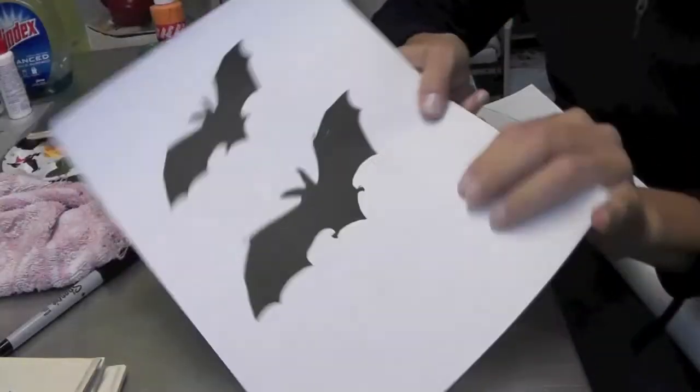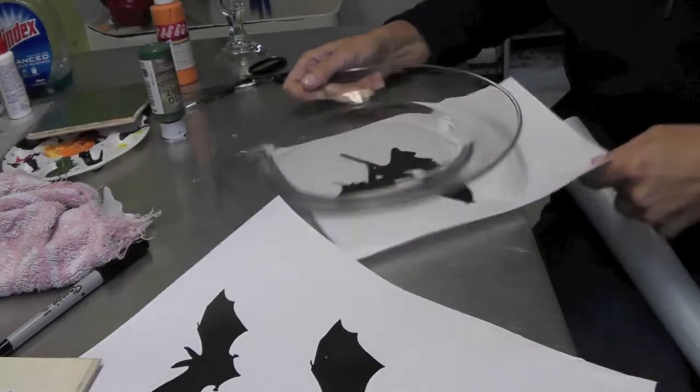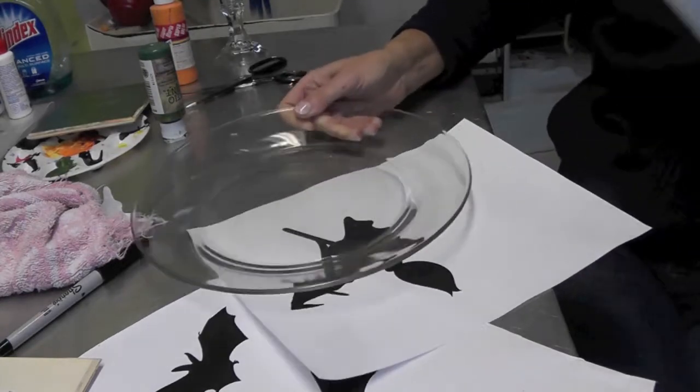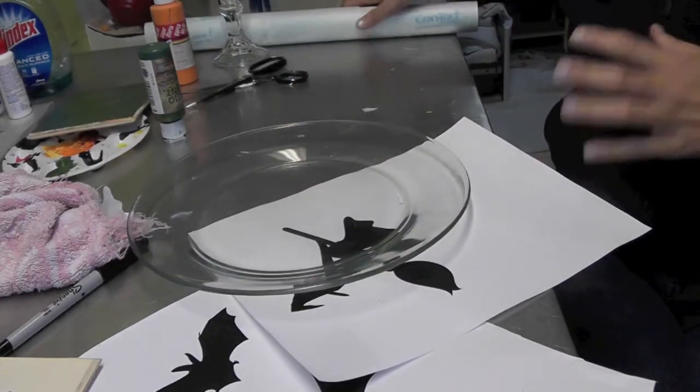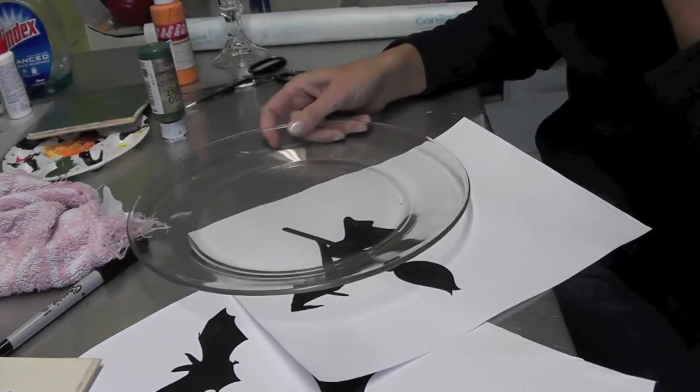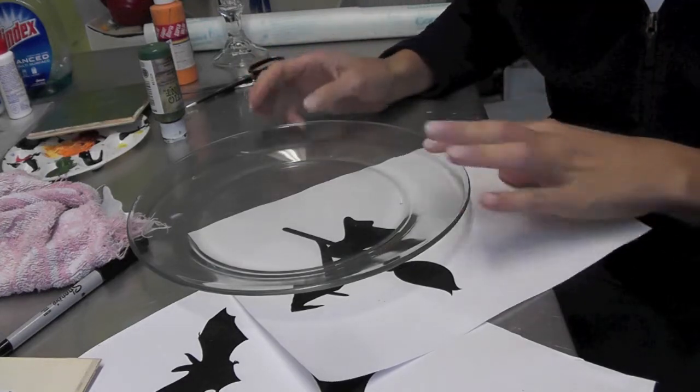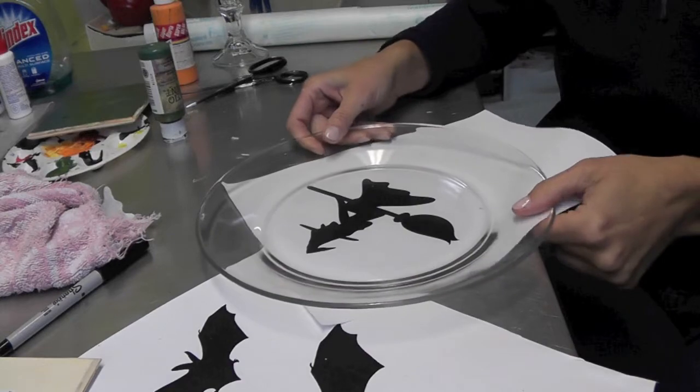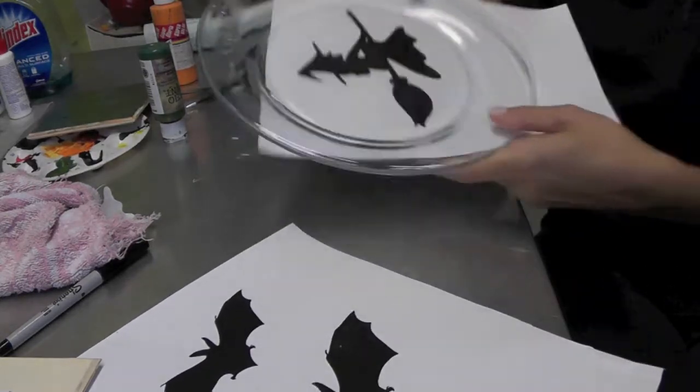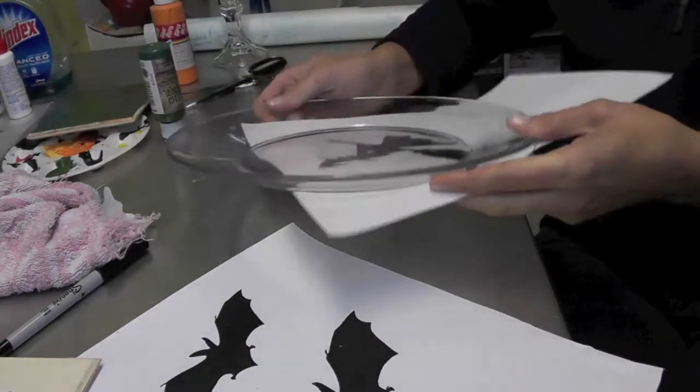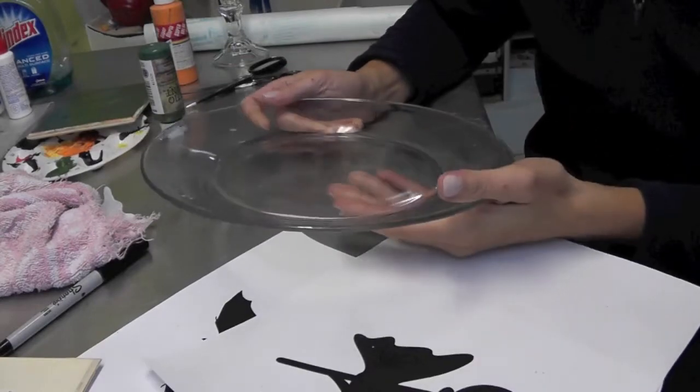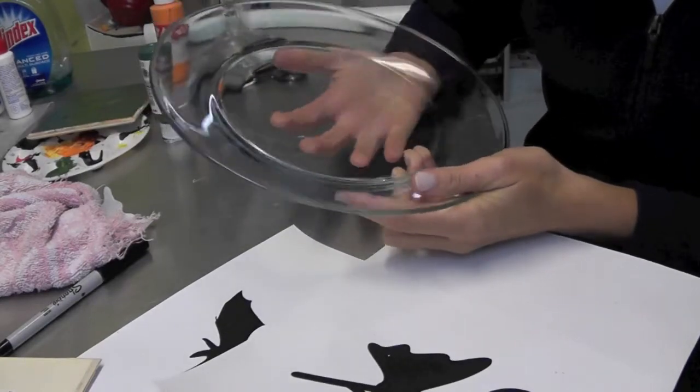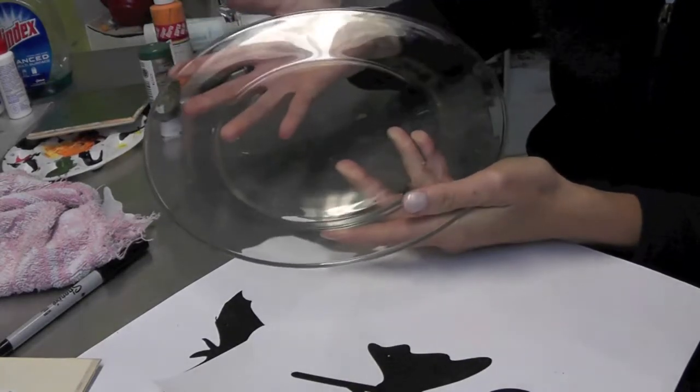When you've decided what you want to do, you could do a bat, you could do a witch, you could do all kinds of stuff. Find something or draw something if you can freehand it. Something that would be a nice silhouette on the back of the plate. So what I'm thinking I'm going to do is I'm going to do a silhouette of a witch. And what we're going to do is we're going to spray paint it orange. So the plate will be predominantly orange.